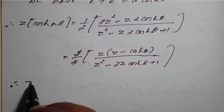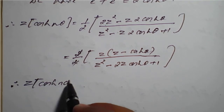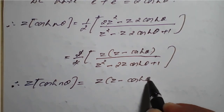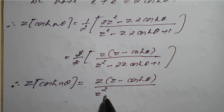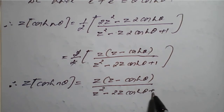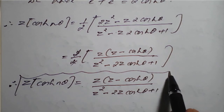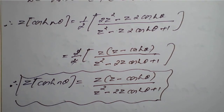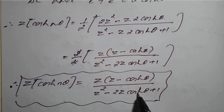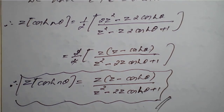Therefore, the Z-transform of cosh(nθ) is z(z − cosh(θ)) divided by (z² − 2z·cosh(θ) + 1). This is the final formula. Whenever you need to find the Z-transform of cosh(nθ), you can directly replace it with z(z − cosh(θ)) / (z² − 2z·cosh(θ) + 1).